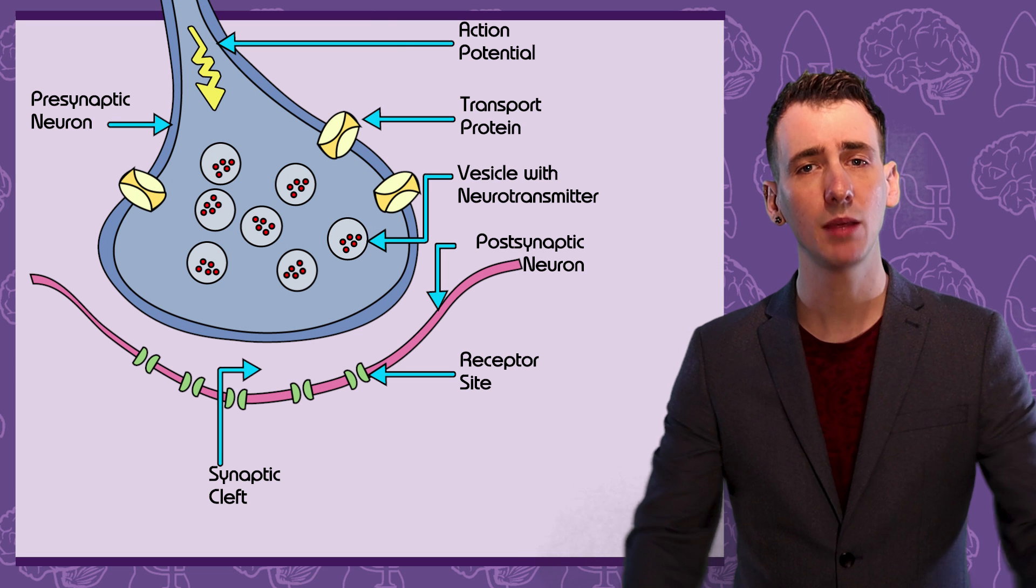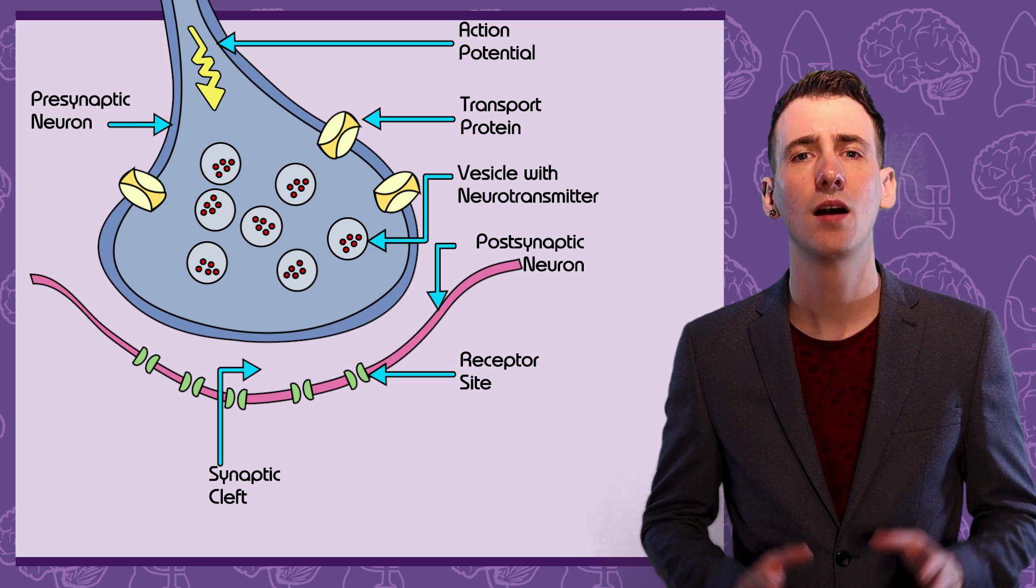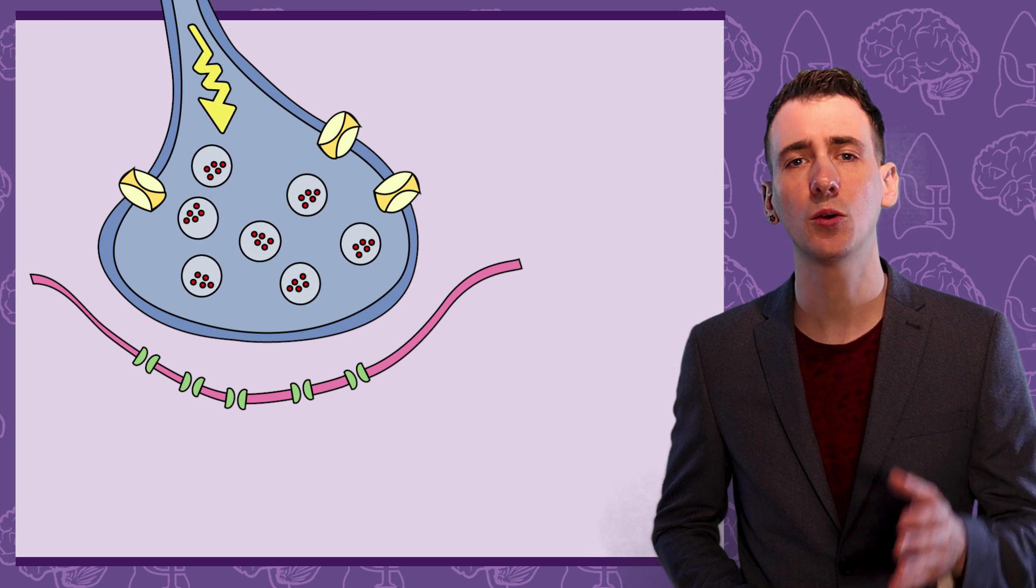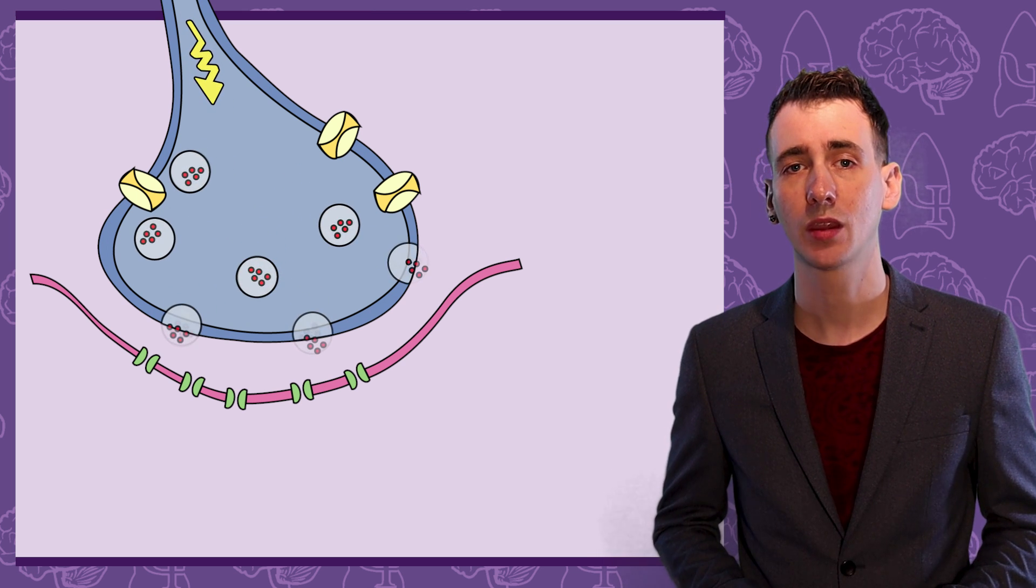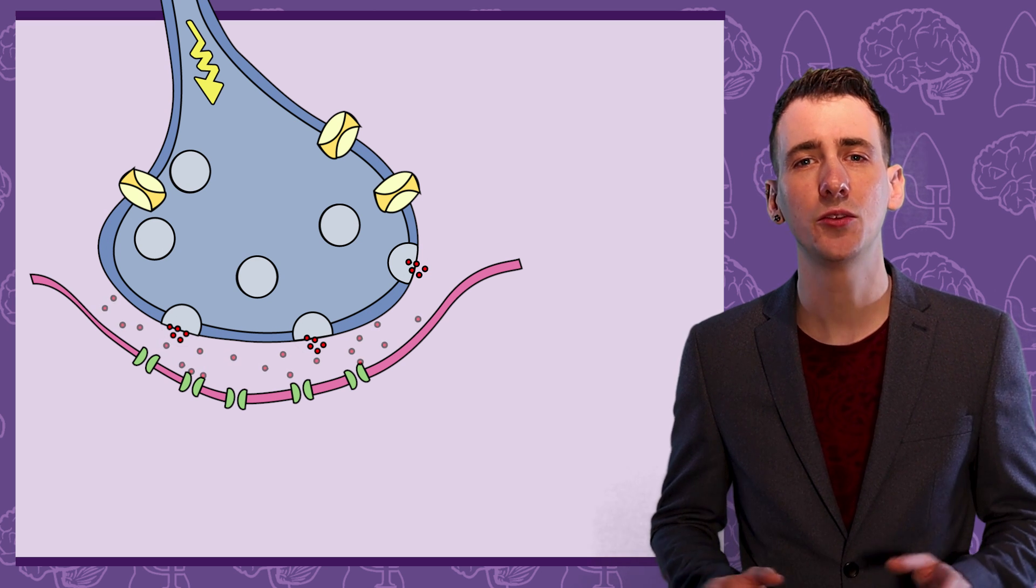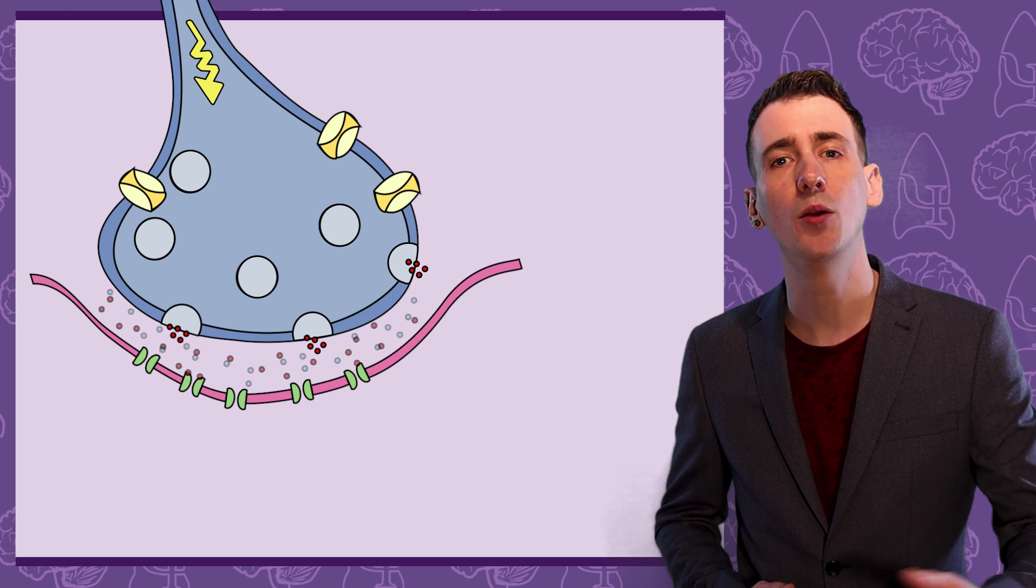Now that the synapse is labelled, let's run through the process of synaptic transmission. First, an action potential arrives at the axon terminal. This causes the vesicles to merge with the membrane of the presynaptic cell, releasing the neurotransmitters into the synaptic cleft. These neurotransmitters diffuse across the synaptic cleft, reaching the postsynaptic cell.